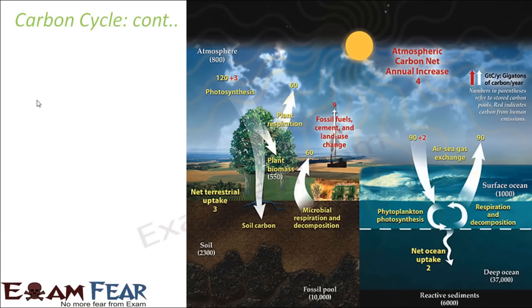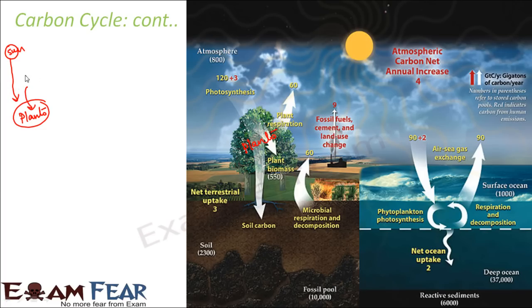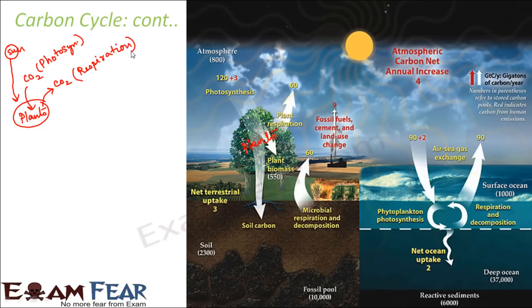Let us start with plants. Plants take in carbon dioxide during the process of photosynthesis, utilizing solar energy. Plants return carbon dioxide to the atmosphere through respiration — respiration is just the opposite process. So intake of carbon dioxide happens during photosynthesis, whereas release of carbon dioxide happens during respiration. This is how plants both give and take carbon dioxide.